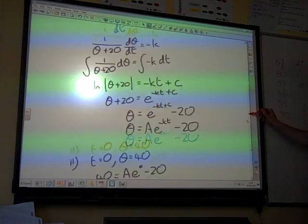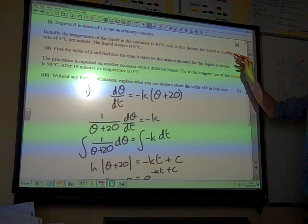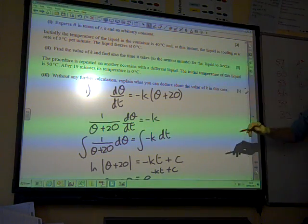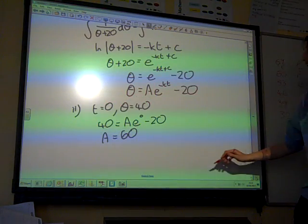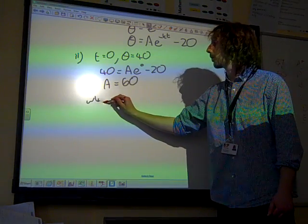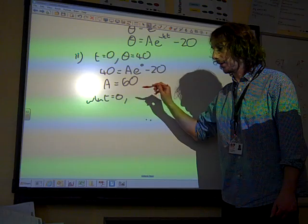What else did it say there? It told us that the liquid is cooling at a rate of 3. Now cooling at a rate of 3. So the temperature is going down at a rate of 3 degrees per minute. So when t is zero, we've got this as being,